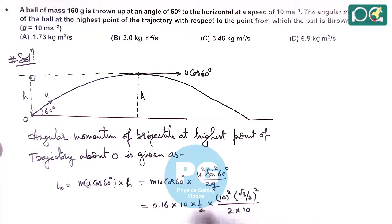So here if you numerically solve this, this will give us a value 3 kg meter square per second, which matches with option B. So answer to this question here is option B.